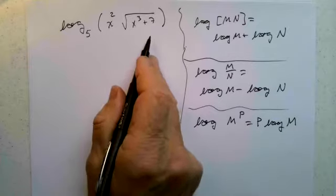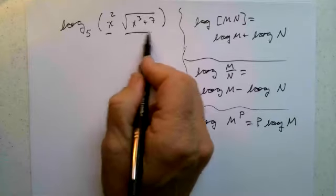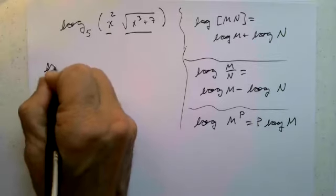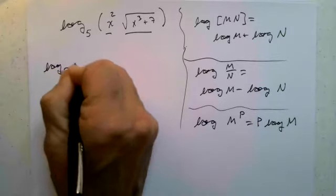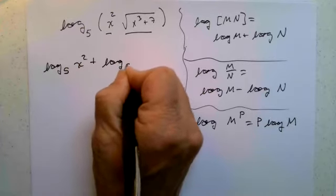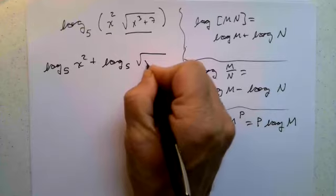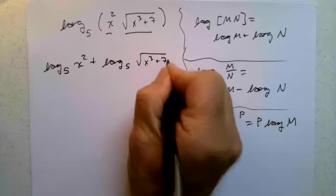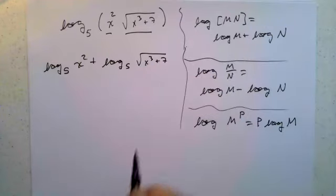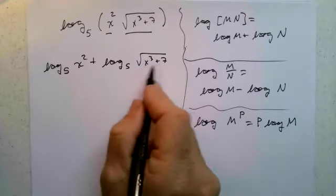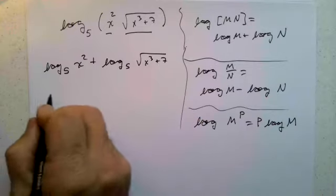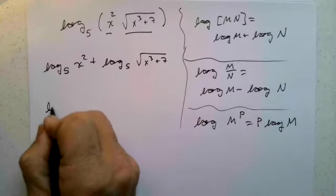In this first problem we have a product, so log of this times this becomes the log of the first plus log of the second. We get log base five of x squared plus log base five of the square root of x cubed plus seven. I want to remind you there is no log of m plus n rule, so that's something to keep in mind. I'll also rewrite the second piece as x cubed plus seven to the one-half power, since a square root is the one-half power.